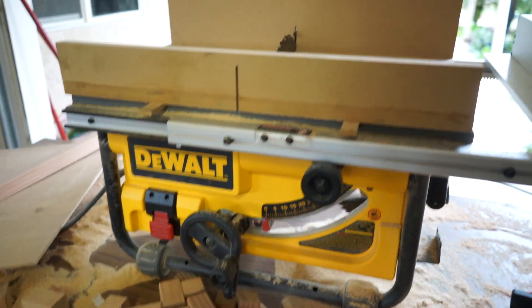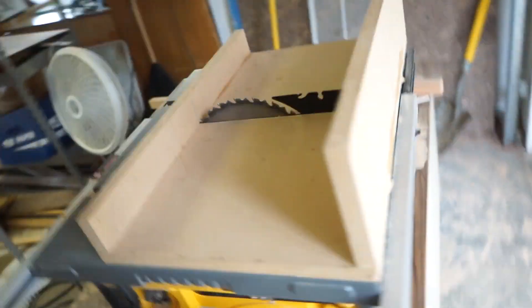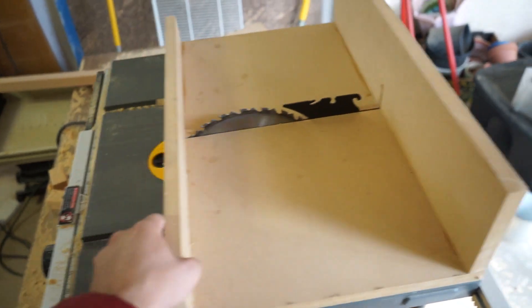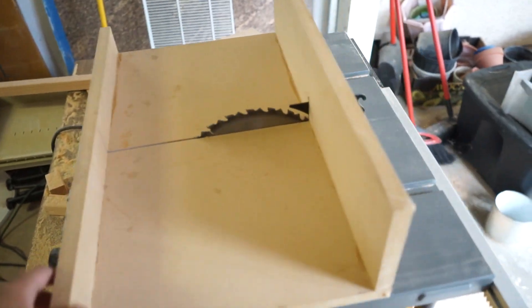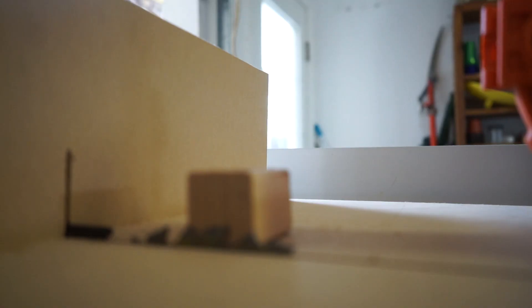So all I'm using is just a DeWalt table saw - a miter saw would be a lot easier but I don't have one. So I just had this sled laying around that I made earlier and I'm going to use this to make all the diffuser blocks.